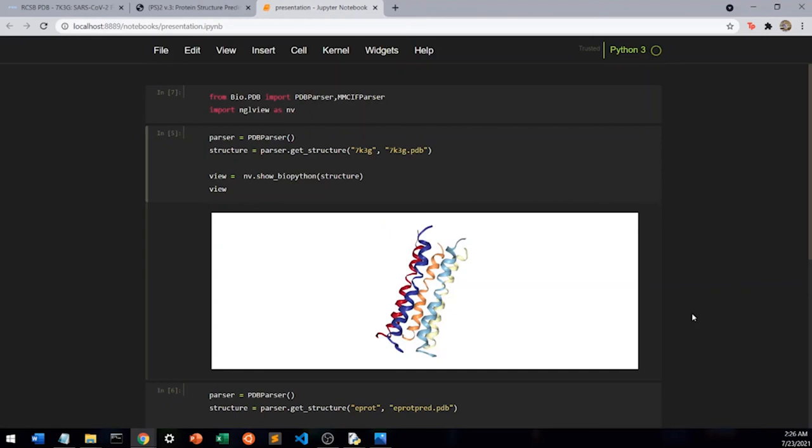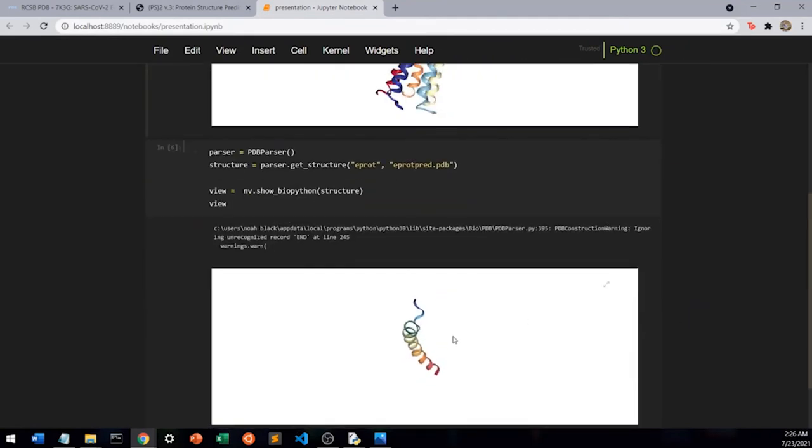Next, let's display our predicted structure. Our predicted model should look like one of the helixes in our reference. As you can see, there is some similarity between the structures, but by no means are they identical.